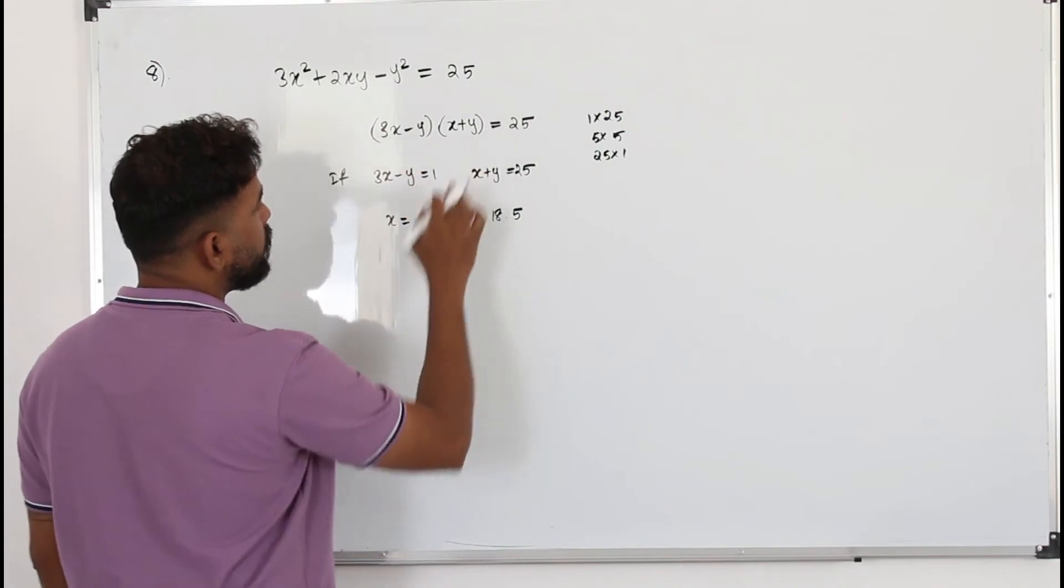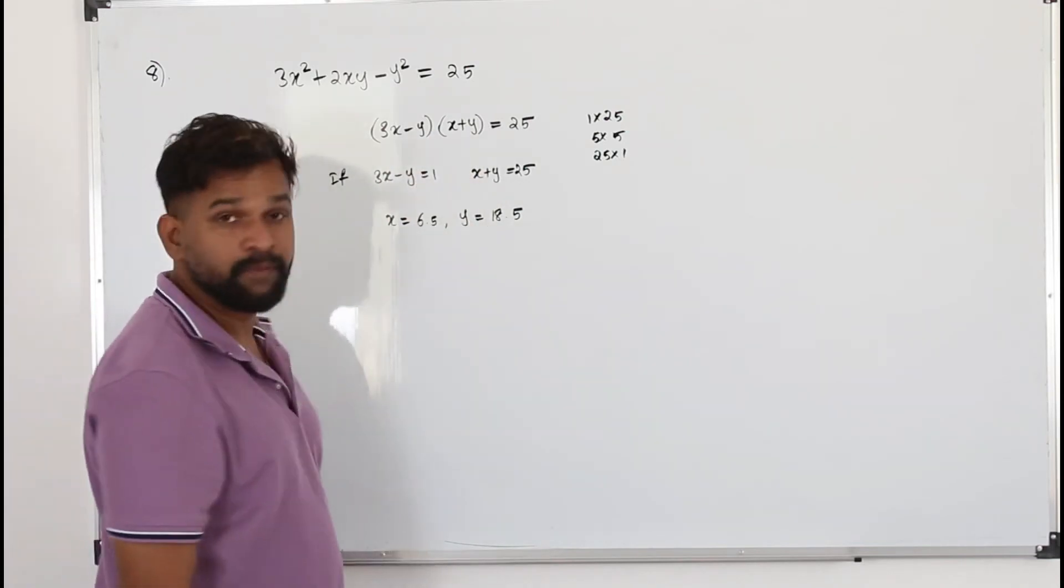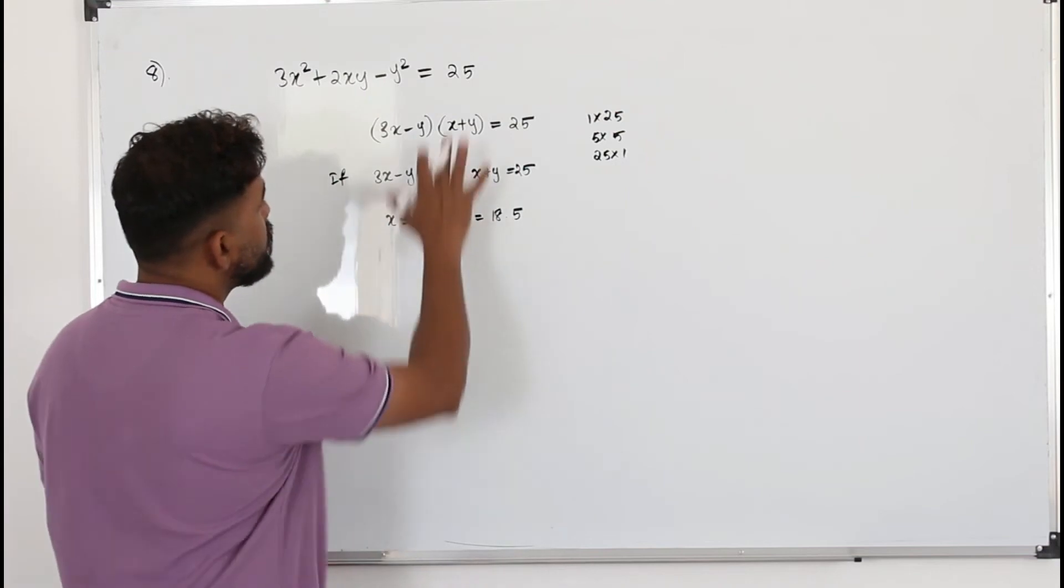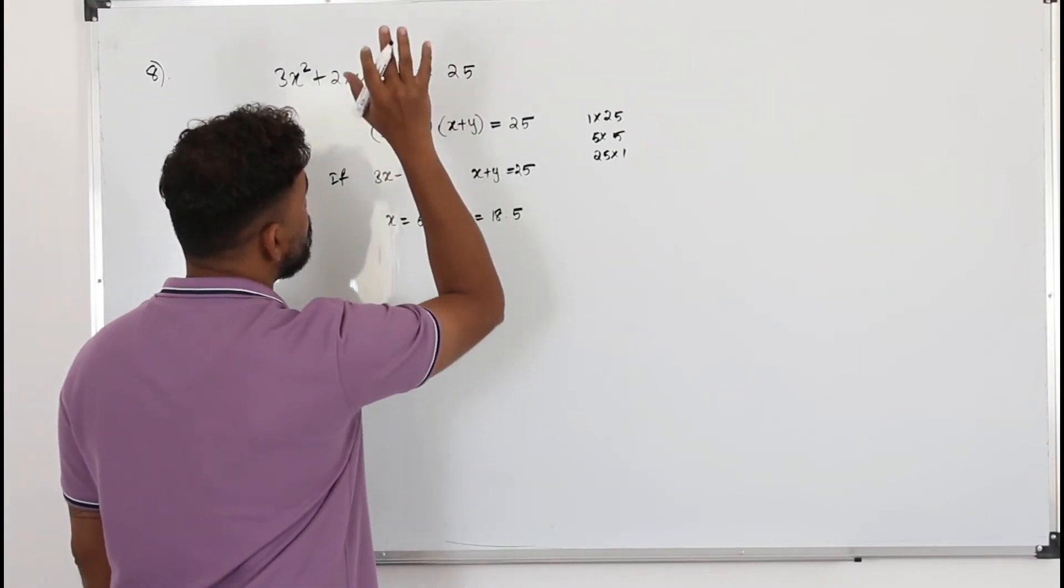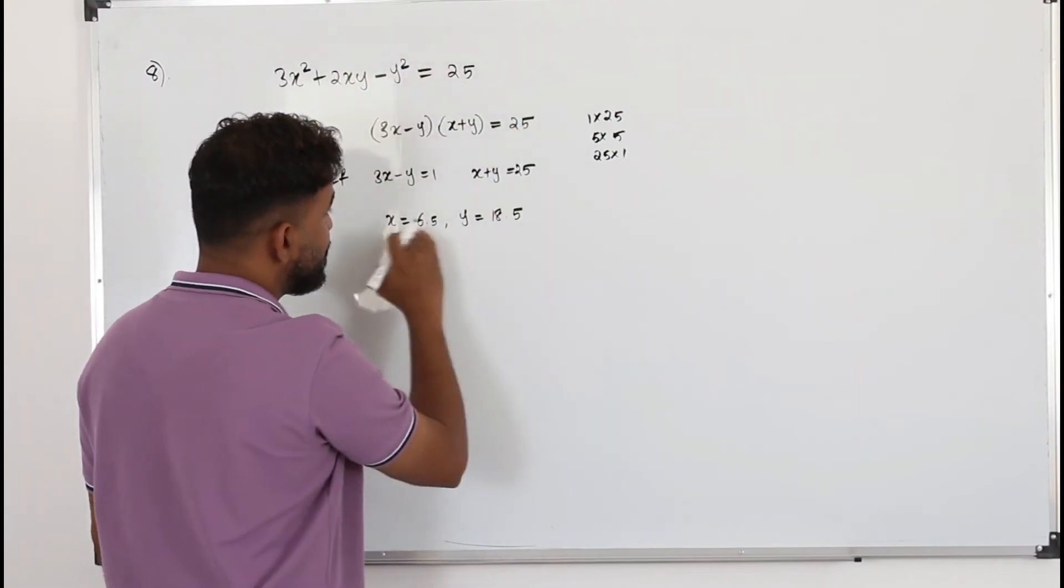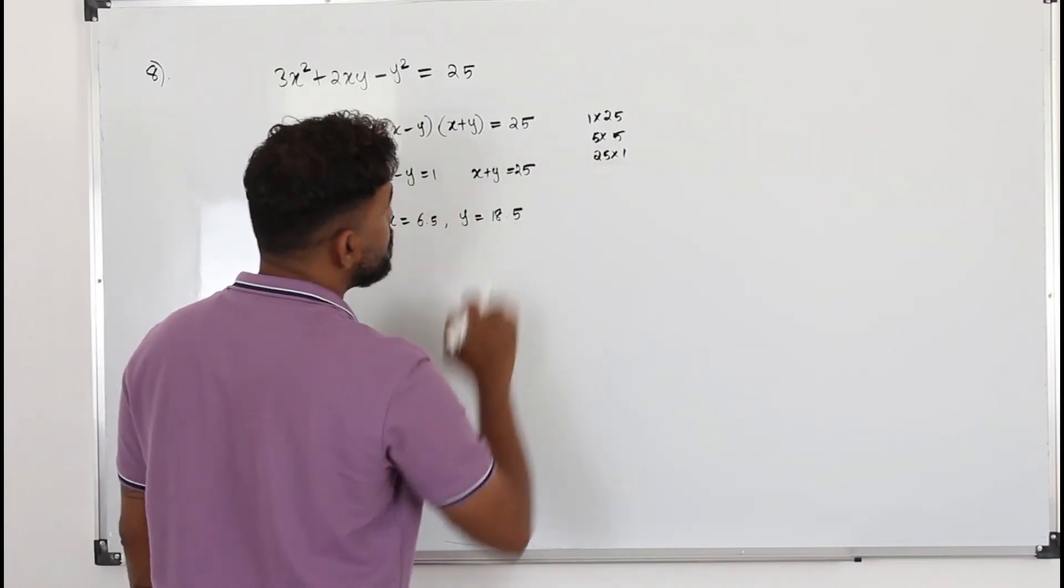Now we need to do that for the other cases. So you get decimal numbers, not integers. So it's proved, the theorem is proved for this particular case. Now we need to take this and this case.